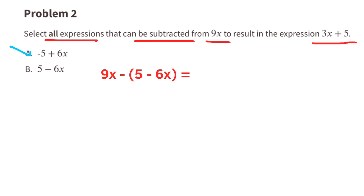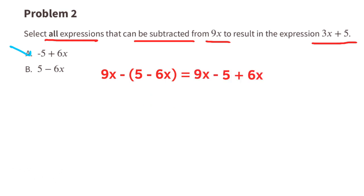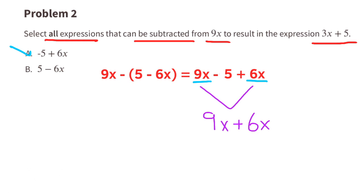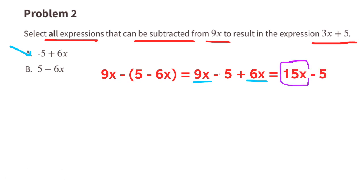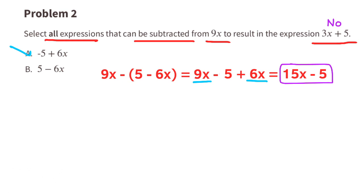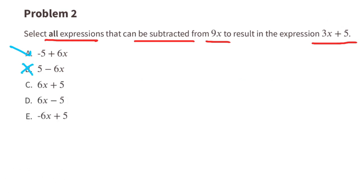Option B: a negative times a positive is a negative, and a negative times a negative is a positive. We can rewrite this expression as 9x minus 5 plus 6x. We have terms with an x and terms without an x, so we can combine the like terms. 9x plus 6x equals 15x, so the expression reads 15x minus 5. Since 15x minus 5 is not the same as 3x plus 5, this expression is not equivalent to the original.